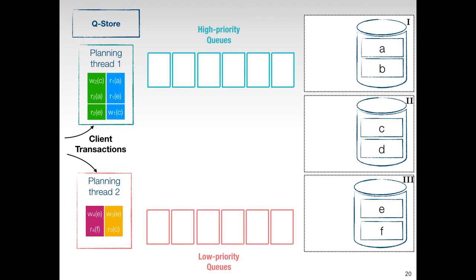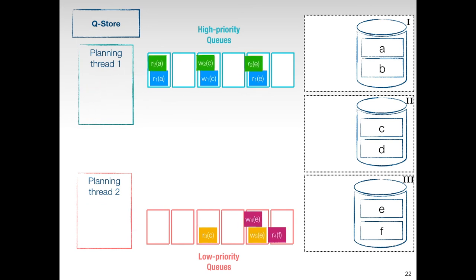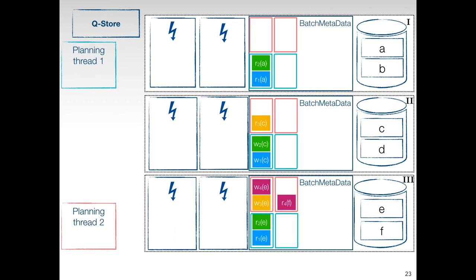We go over an animated example to illustrate transaction processing in Q-Store. In this example, we have three server nodes containing six records in the distributed database. Consider one execution queue for each record. At the top, we have high priority execution queues which are created by planning thread 1, and at the bottom, we have lower priority execution queues created by planning thread 2. Once all transactions are planned, they are ready to be delivered to the execution threads. This concludes the planning phase.